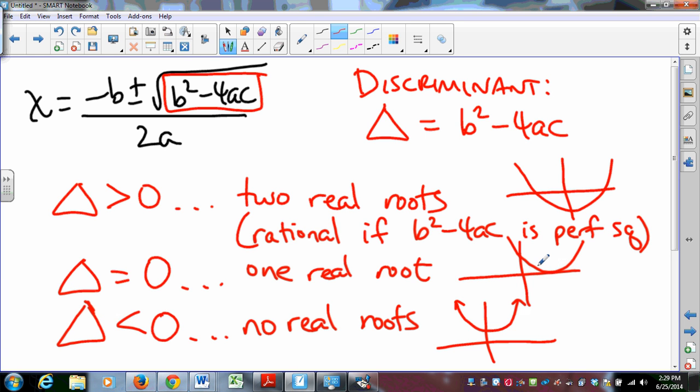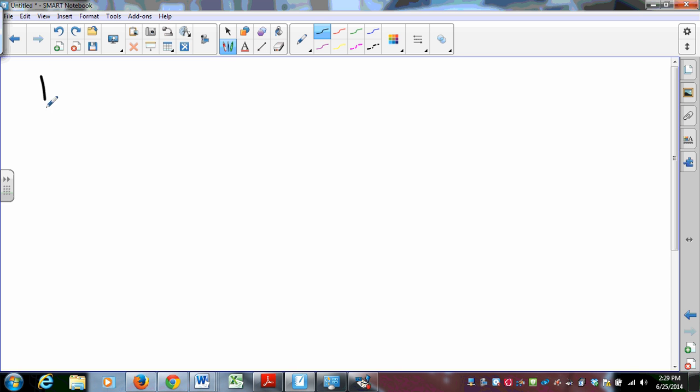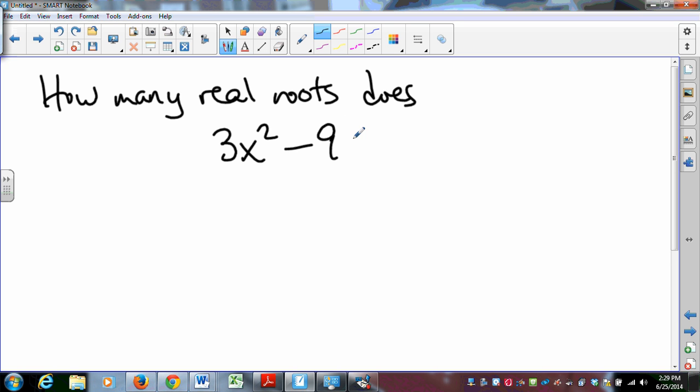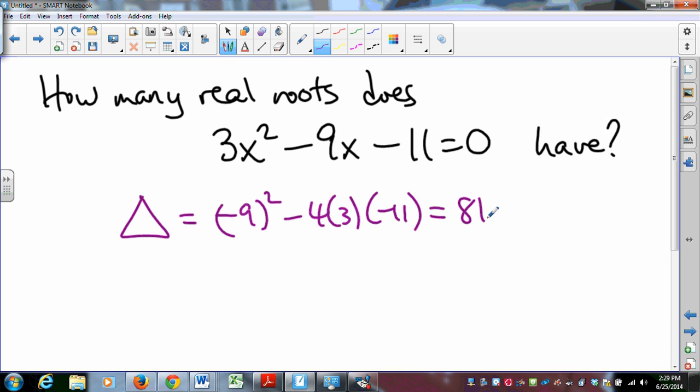So you've got connections between graphs of parabolas and values of the discriminant and the quadratic formula. They all flow together. So if I just want to know how many real roots does 3x² - 9x - 11 = 0 have, then I just compute the discriminant which is b² - 4ac and that's, oh my, 81 plus 132 and that's 213 which is positive. So there are two real roots, two real distinct roots.